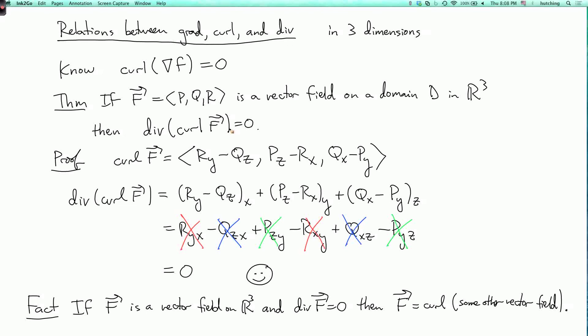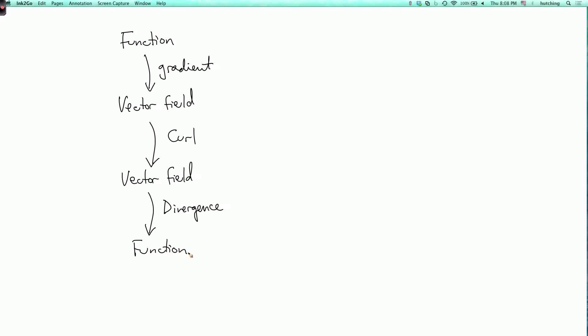So let's sum this up in a chart. If you have a function, you can take its gradient to get a vector field. Now if you have any vector field, you can take its curl to get another vector field. And also if you have any vector field, you can take its divergence to get a function again. Now if you do two of these operations in succession, you get zero.